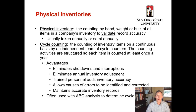The first method is a physical inventory — that's the counting by hand, weight, or bulk of all items in a company's inventory to validate record accuracy. It's usually taken annually or semi-annually.